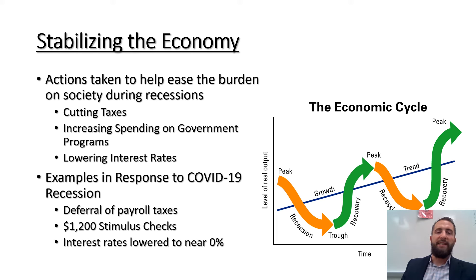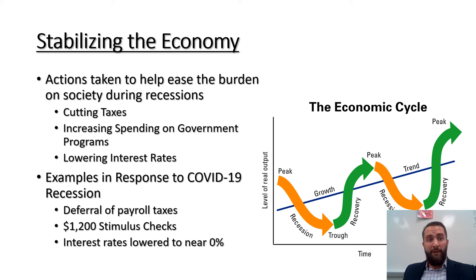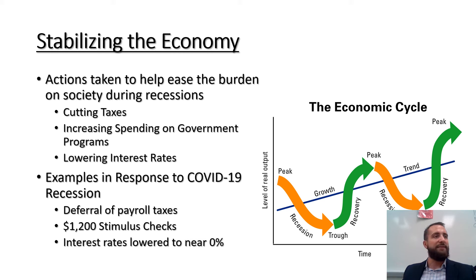The sixth and final function is stabilizing the economy. These are the actions that the government takes during the economic cycle, and most specifically during recessions. Whenever you have a recession, it's characterized by two main things: businesses stop producing as much, and because those businesses aren't making as much, you have higher rates of unemployment. Unemployment is not good for a society because people who aren't working aren't going to necessarily be the best citizens — it usually leads to higher violent crime. So we want to do our best to ensure that people can find work.